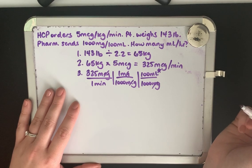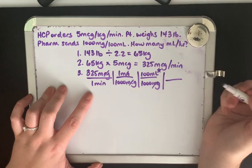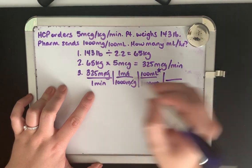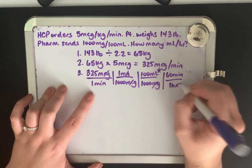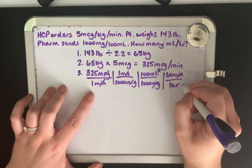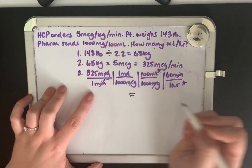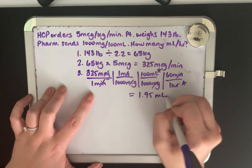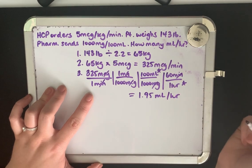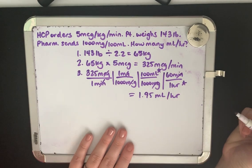So now we just need to convert from minutes to hours. So whenever it needs to be canceled out, it has to be on the opposite, so from the bottom. So there's 60 minutes in one hour. This cancels these two out and we're left with mLs per hour. Now when we solve this, we wind up getting 1.95 mLs per hour. This would more than likely be rounded to two because we don't want to do anything less than the tenths place.